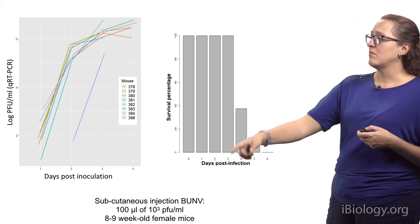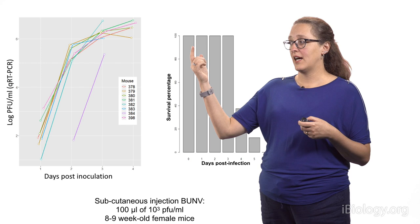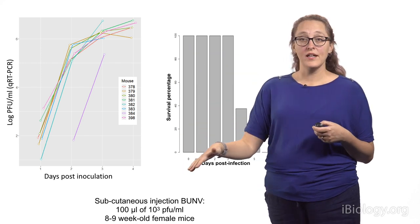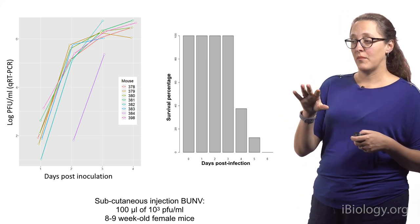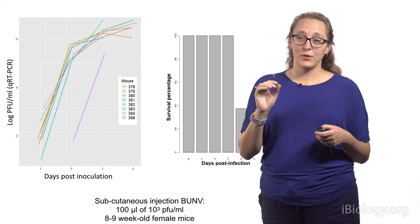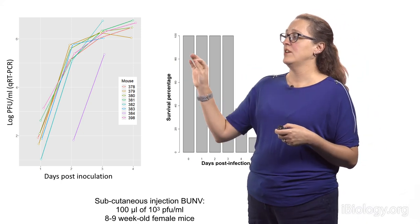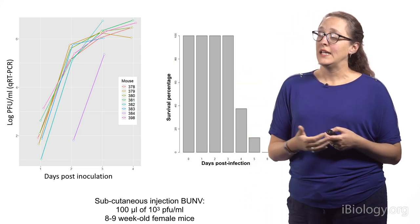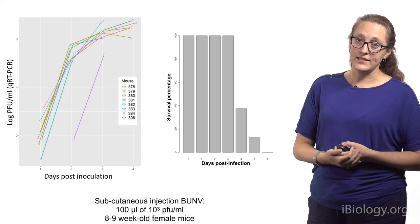We also saw high viremia — up to about 6 to 8 logs. We put in 3 logs, which is about 1,000 virions per milliliter, and we got about 7 to 8 logs out at peak. We also had 100% mortality by day 6. So these mice are very susceptible even at relatively low doses of this virus.